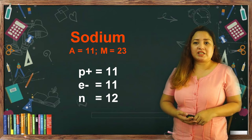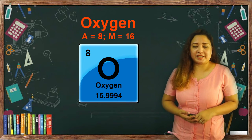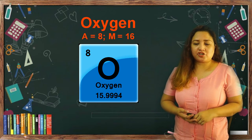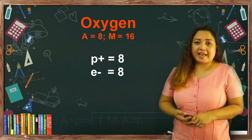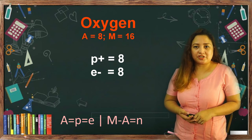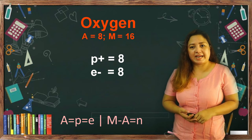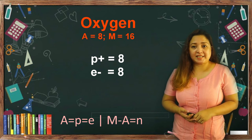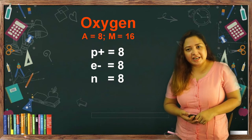How about our second element, oxygen? Oxygen has atomic number 8 and mass number 16. Following APEN mnemonics, your proton and electron numbers should be equal to the atomic number — so the answer is 8. For the neutron number, following APEN mnemonics that is mass minus atomic number: 16 minus 8 gives you 8. So oxygen has 8 protons, 8 electrons, and 8 neutrons. How was your answer — did you get all of it correctly?